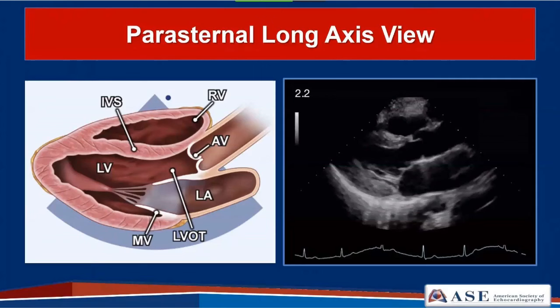On how grayscale is different from gain: gain just adjusts the overall brightness of the echoes as they return, uniformly amplifying all echoes across the entire image. Grayscale uses a post-processing map to determine, when those signals come back, what brightness we assign them based on the grayscale map chosen. It's not a uniform increase—it's not something the user does in real time; it's adjusted by selecting which map to use.